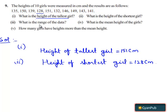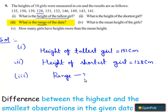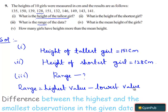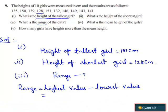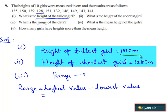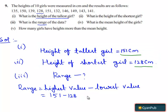Now let's move to the third part: what is the range of the data? We can obtain the range by subtracting the lowest observation from the highest observation. So, range is equal to highest value minus lowest value. Here, the highest value is 151 cm and the lowest value is 128 cm. Therefore, 151 minus 128 is equal to 23 cm.